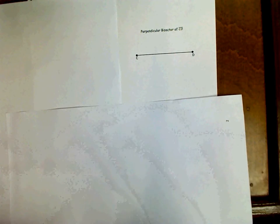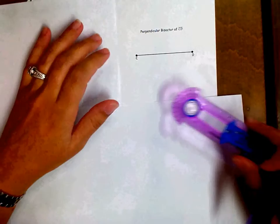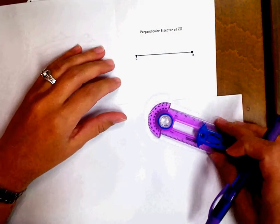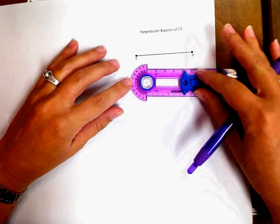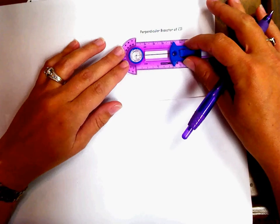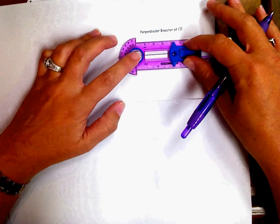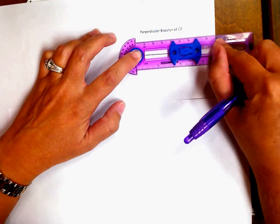The second construction that you're responsible for knowing on your test is the construction of the perpendicular bisector. First thing you need to do is put the center of your compass on point C and stretch out your compass past the halfway mark.